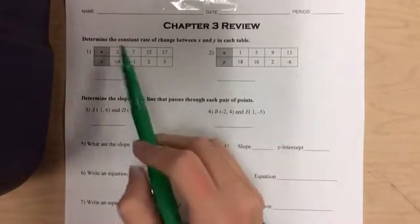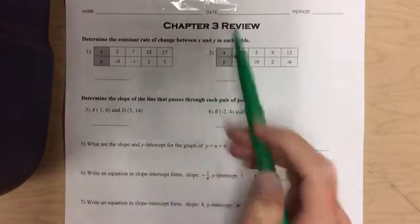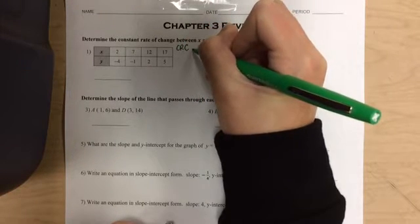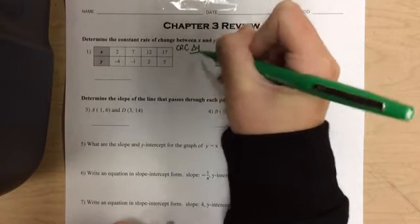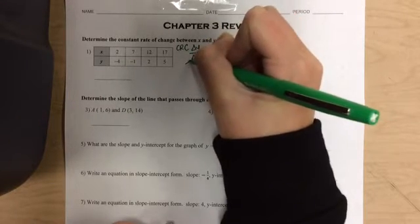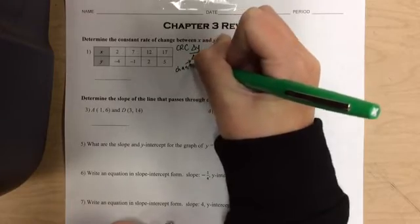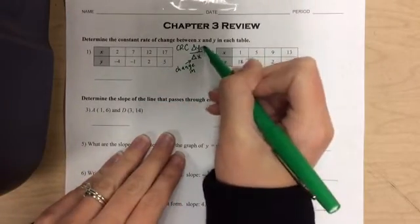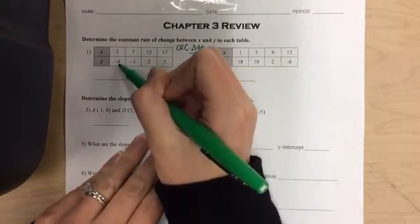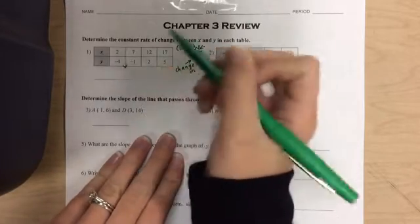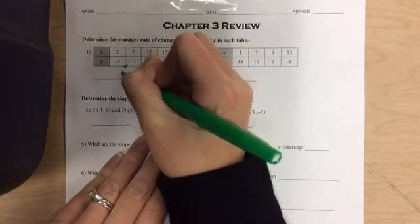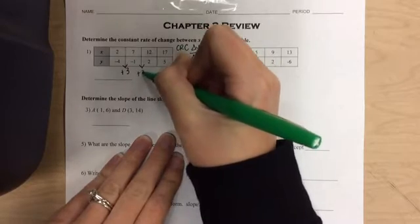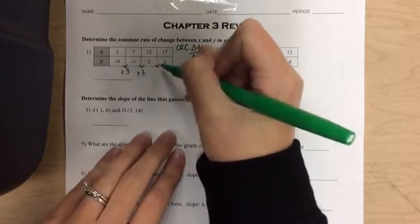The first part says to determine the constant rate of change between x and y in each table. If you remember, to find the constant rate of change, all we do is we find the change in y and we divide it by the change in x. Remember this triangle just means change in. It's a long word to write out. So I'm going to start with the y's because they're on top. How do I get from negative 4 to negative 1? That's what I always ask myself. To get from negative 4 to negative 1, I added 3. How did I get from negative 1 to 2? I added 3. How did I get from 2 to 5? I added 3.